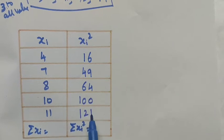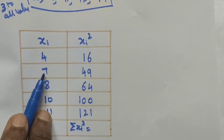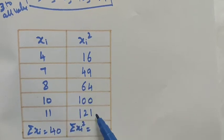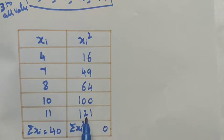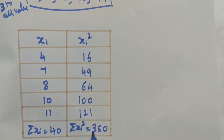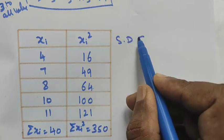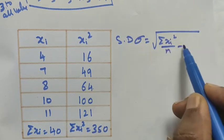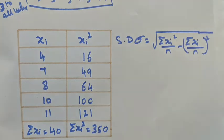The sum of the squared values is 16 + 49 + 64 + 100 + 121 = 350. We know the formula for standard deviation: sigma equals the square root of (Σxi² / n) minus (Σxi / n)², where n is the number of data points.